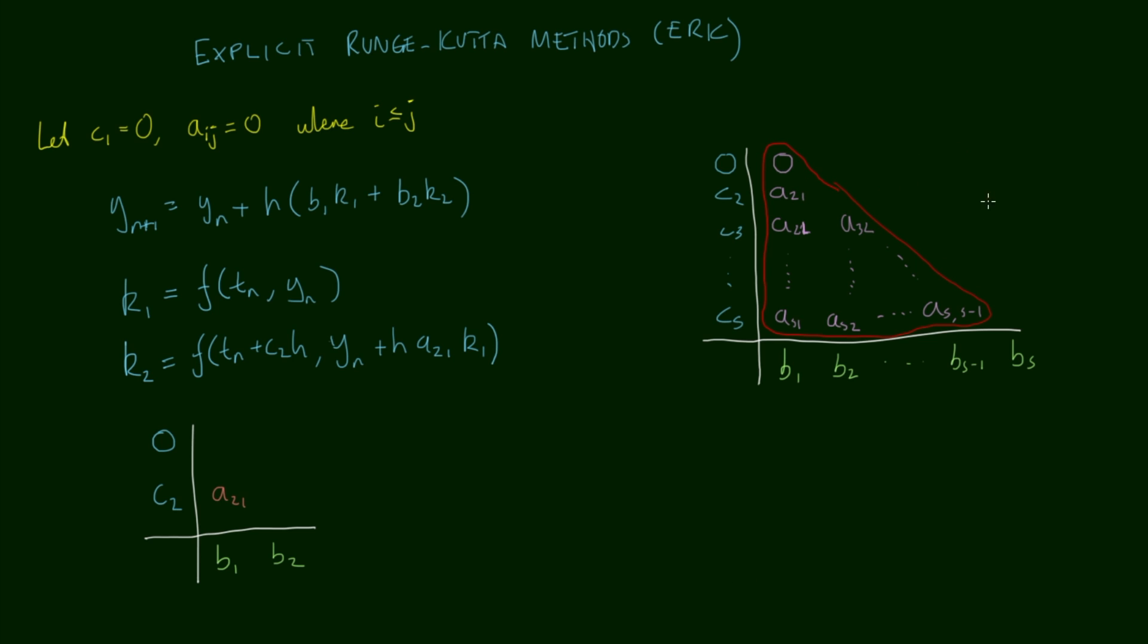When we're presented with a Butcher tableau, if it's strictly lower triangular we have an explicit Runge-Kutta method, and if it isn't strictly lower triangular we know we have an implicit Runge-Kutta method.